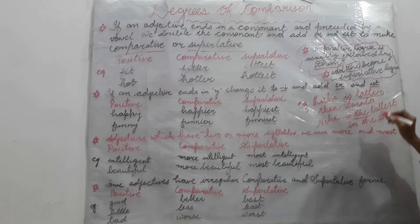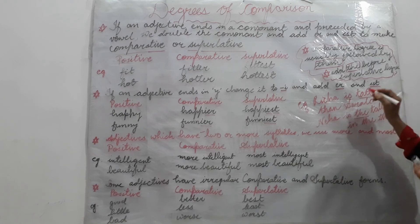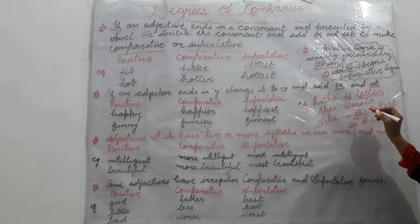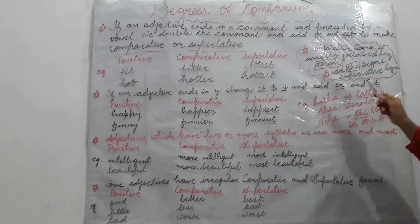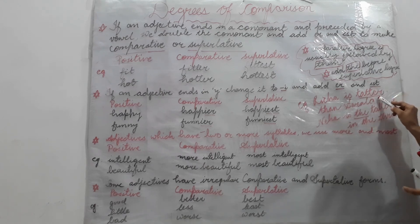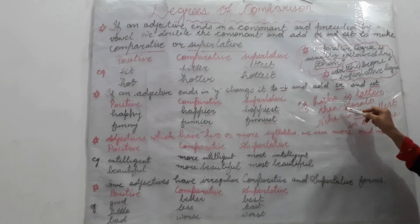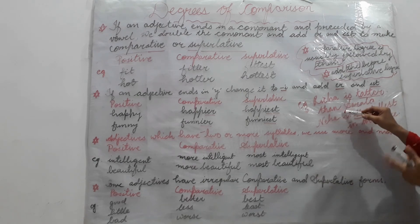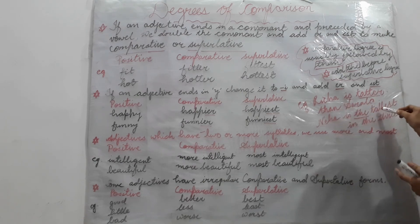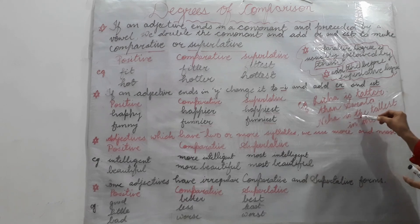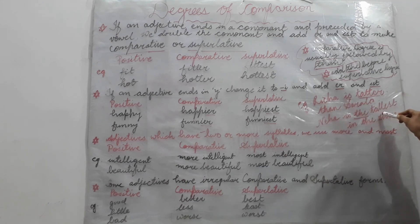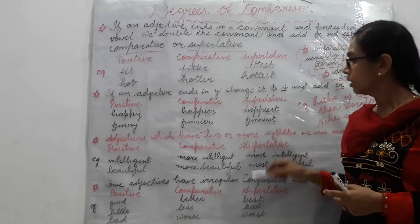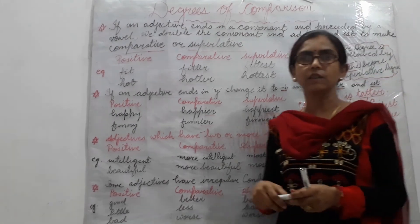So, these are the rules of making sentences with comparative degree and superlative degree. Always remember: we use 'than' before the comparative degree, and we use article 'the' before the superlative degree of comparison. That's all about degrees of comparison. Thank you.